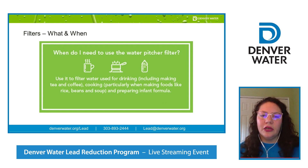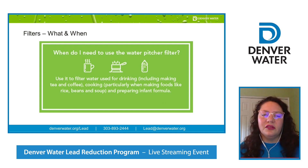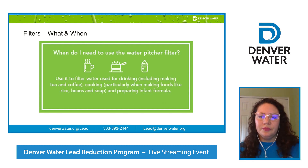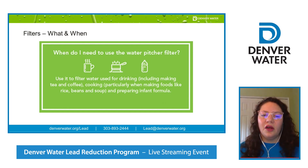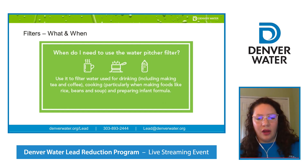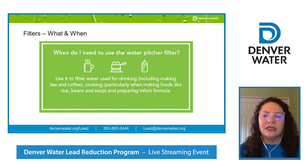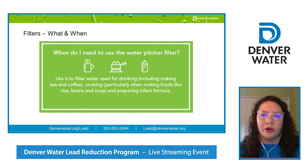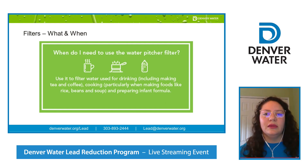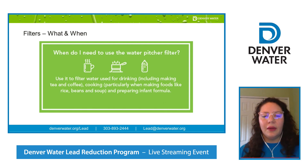Customers in the lead reduction program should use filtered drinking water for cooking and preparing infant formula. It's critical to use your water pitcher filter not only for drinking and preparing infant formula, but also when cooking — especially when preparing foods like rice, beans, and soup that absorb the water. Boiling water does not remove lead. It's also important to use filtered water when making tea and coffee. Continue using filtered water until six months after your service line is replaced, just to make sure all debris and lead is fully removed.